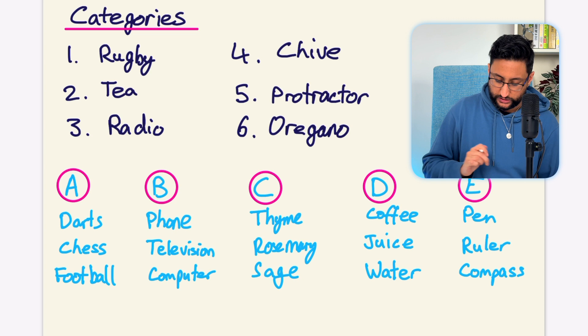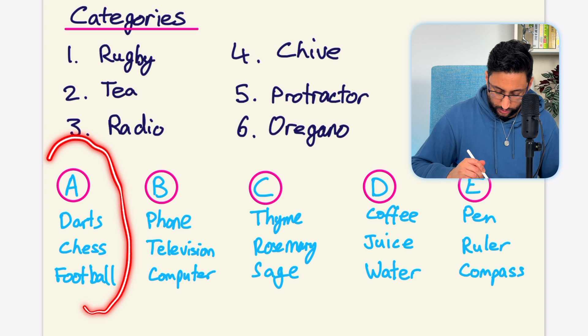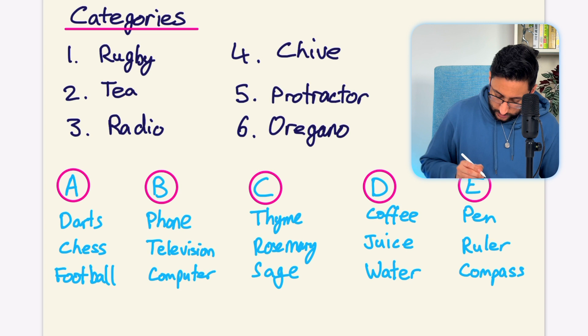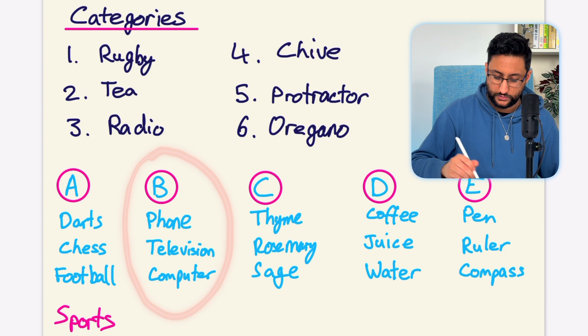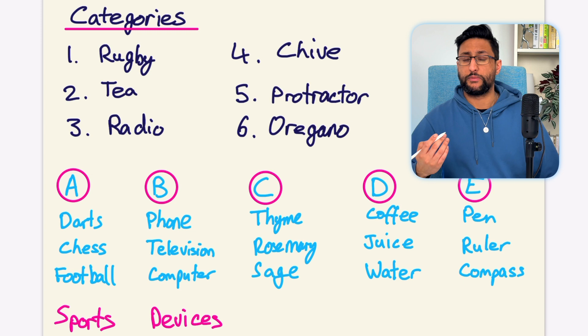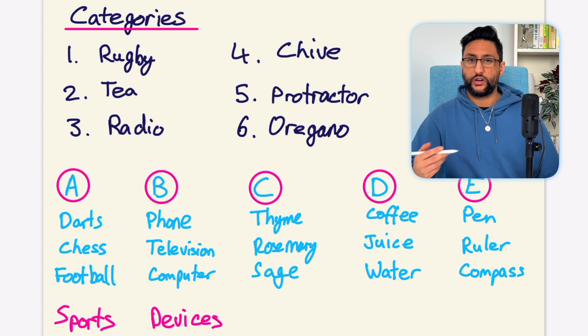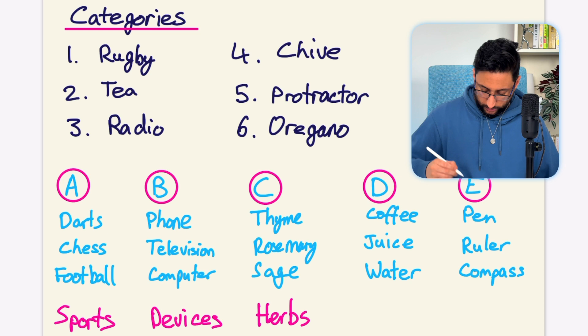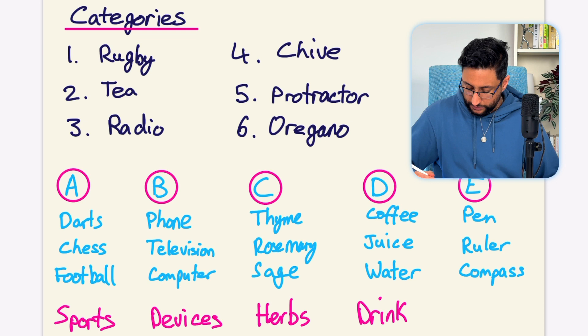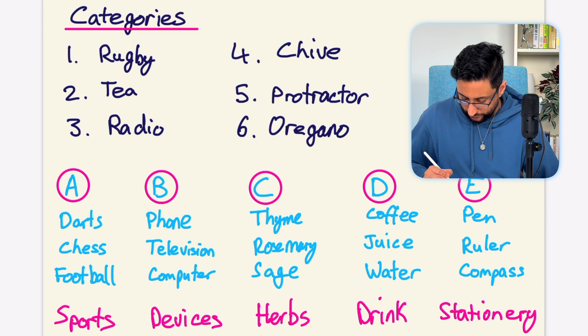We have five categories here, A, B, C, D and E. In the first one we have darts, chess and football — they are all sports. In category B we have phone, television and computer, and they are all types of devices. Group C might throw some people off: we have thyme, rosemary and sage, which are all types of herbs used in cooking. Group D is a little bit easier — we have coffee, juice and water, which are obviously all types of drink. And the last one is fairly straightforward: pen, ruler and compass are all types of stationery.